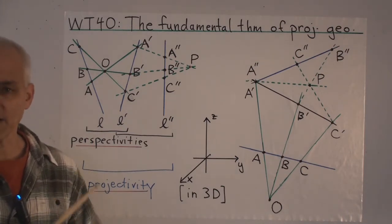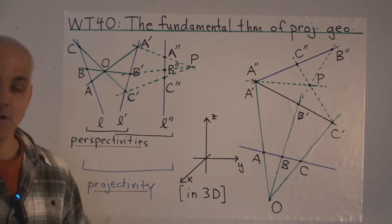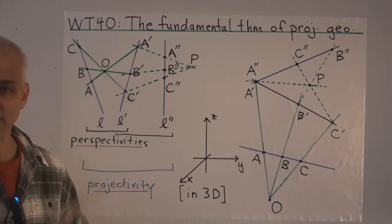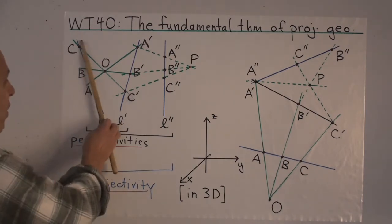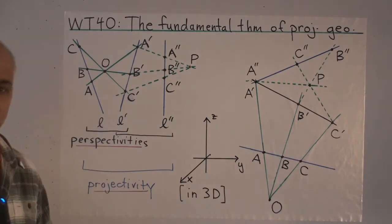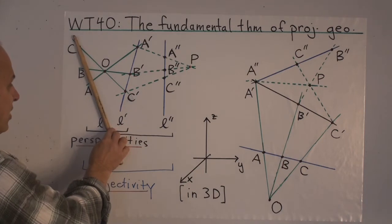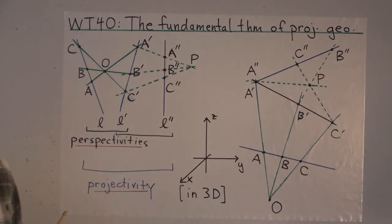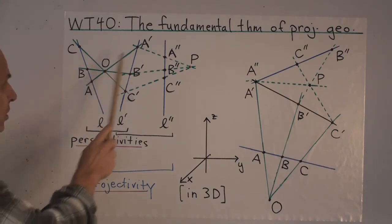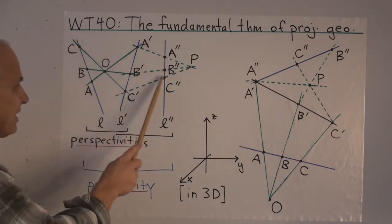So what is a projectivity? A projectivity is a sequence of perspectivities — possibly one, possibly two, possibly many perspectivities followed one after the other. Here we have one perspectivity followed by another perspectivity, and that gives a projectivity. That is an association between points on line L and points on line L double prime, where point A corresponds to A double prime, B corresponds to B double prime, and C corresponds to C double prime.